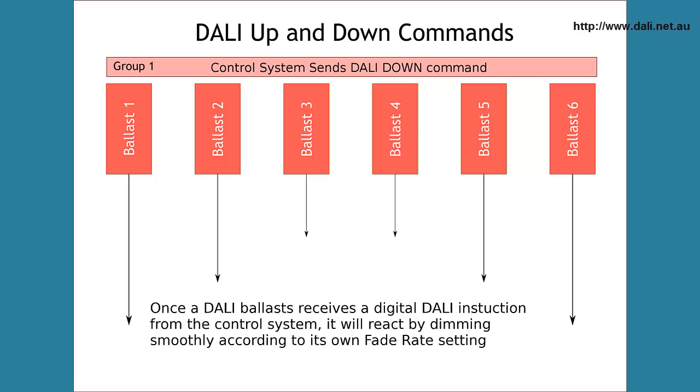As with the Fade Time, Fade Rate is saved and processed by the ballast. This means that the control system does not contribute to making sure that the lights dim smoothly. The ballast instead takes care of its own smooth dimming. In this way regardless of what control system or method you are using to dim the lights, if you have a Dali ballast they will always dim smoothly.